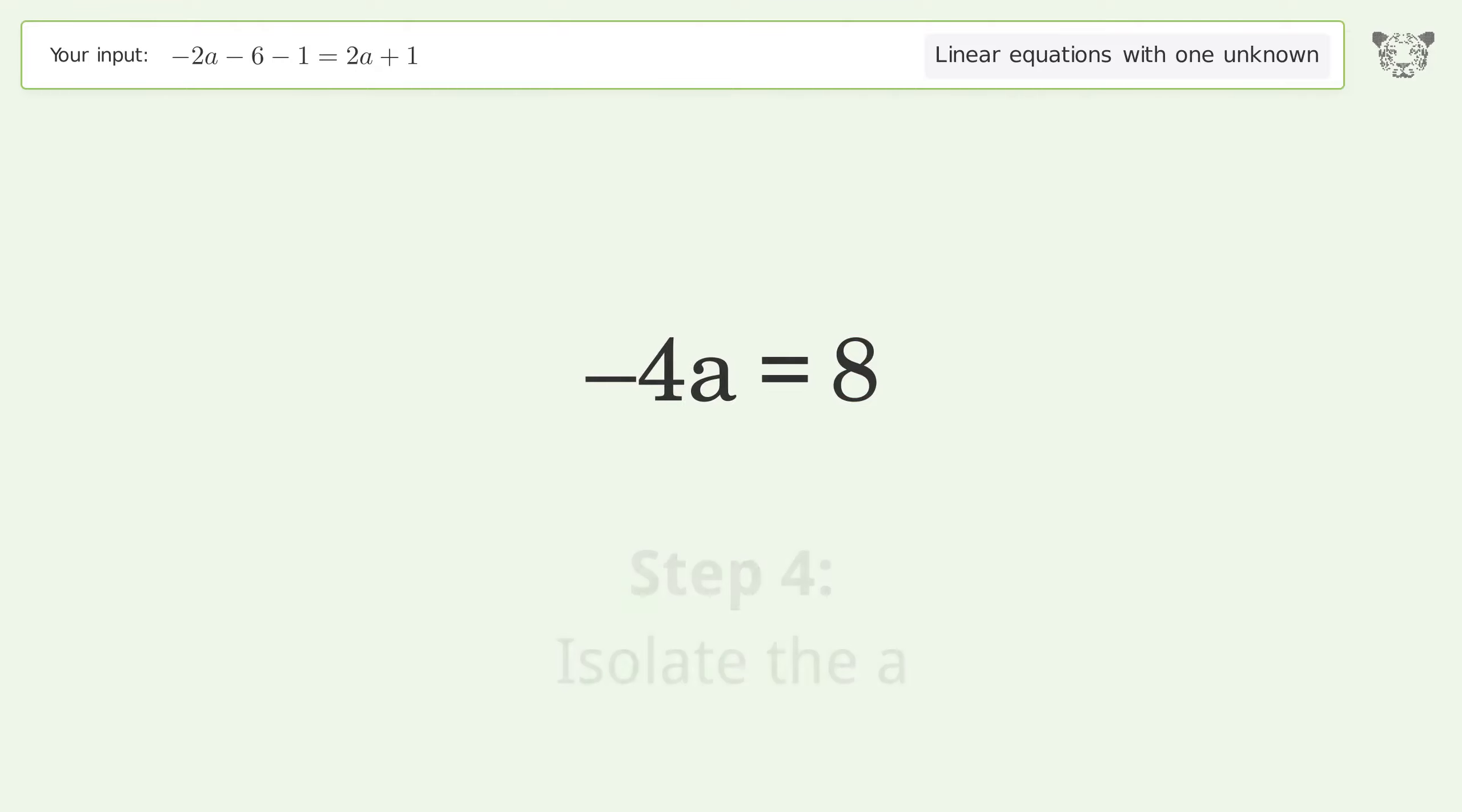Isolate the a. Divide both sides by negative 4. Cancel out the negatives.